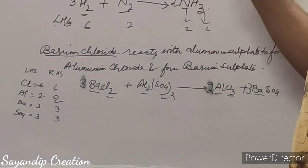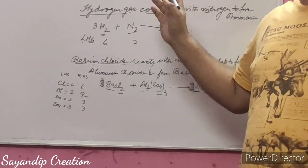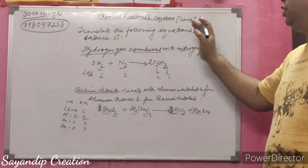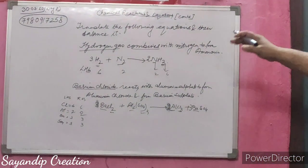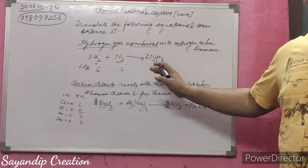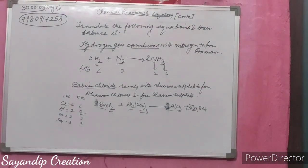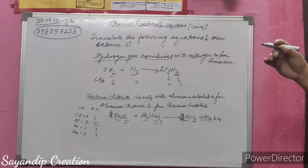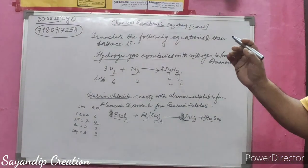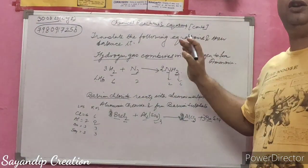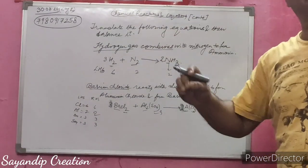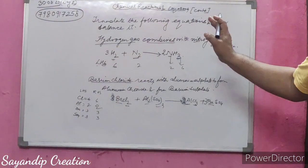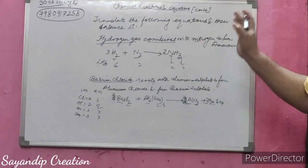So what we learned: two different types — first, the equation is already given and you just have to balance it; second, the equation is given in word form and you have to translate it into a chemical equation and then balance it. A third type is where the products are not given — only reactants are given — and you have to write the products and then balance the equation.